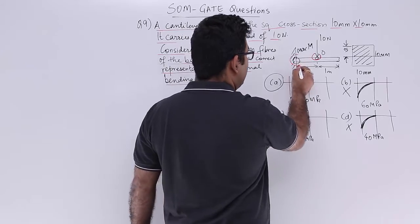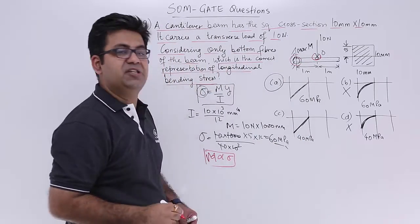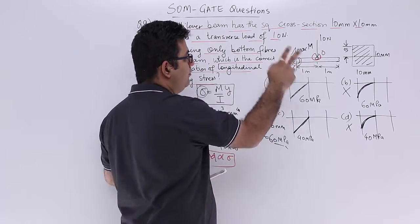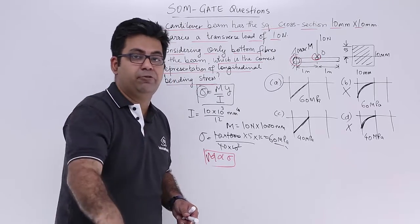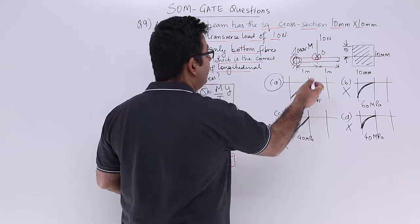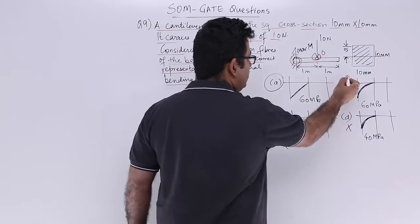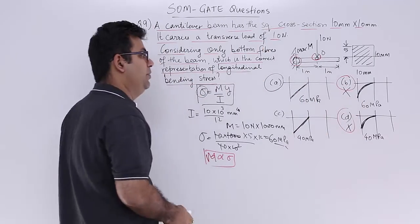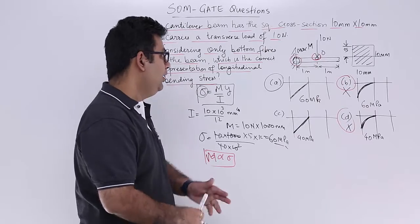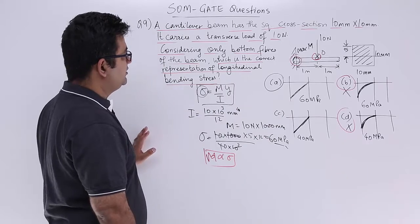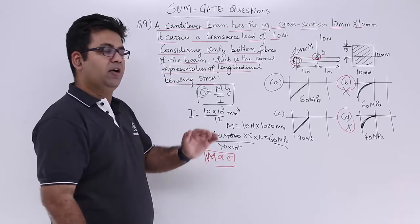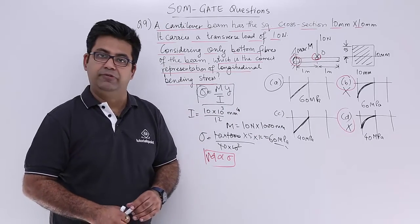And at the leftmost fixed end your bending moment would be maximum. And thus the bending stress would be maximum. And it is a linear variation. So these two things go out of the picture. And then you just find out the magnitude of the maximum bending stress. So I hope you understood this entire explanation. Now let's move on to question number 10 in the next video.